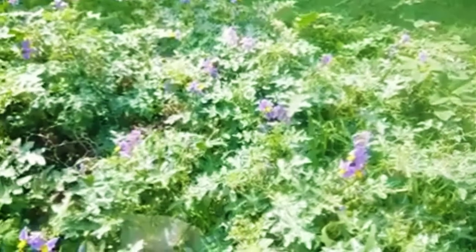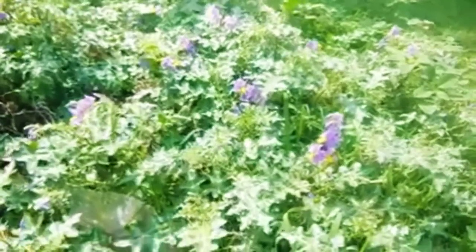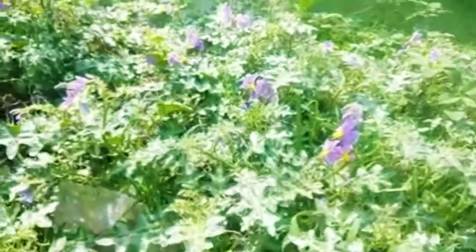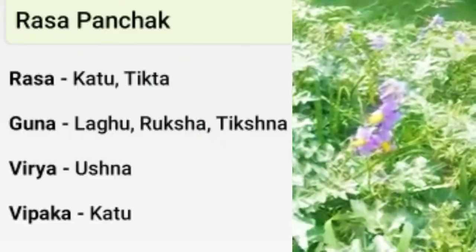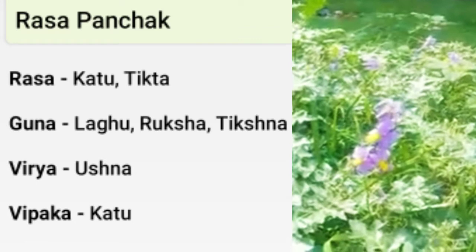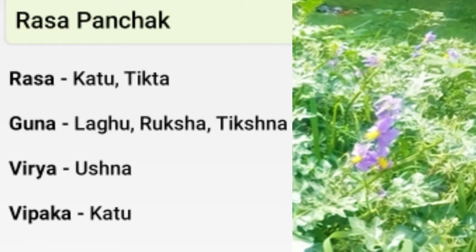The part used is Panchanga, that is the whole plant. Rasa Panchaka: Rasa is Katu and Tikta; Guna is Laghu, Ruksha, and Tikshna; Virya is Ushna; Vipaka is Katu.